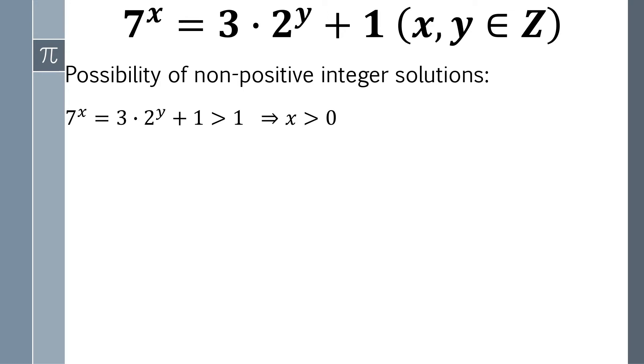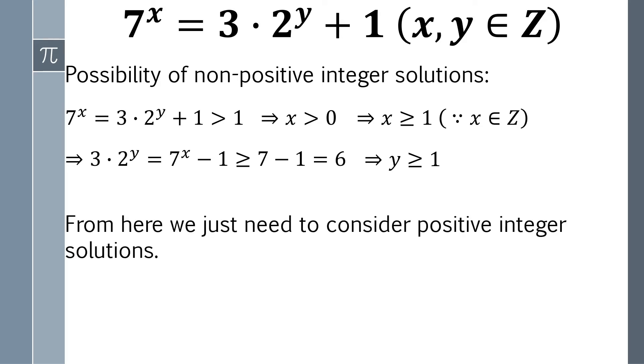Since x is an integer, that means x is no less than 1. And from here, 3 times 2 to the y power is no less than 7 minus 1 equals 6. That means y is no less than 1. And from here, we have demonstrated that both x and y are positive integers. So from now on, we just need to consider positive integer solutions.